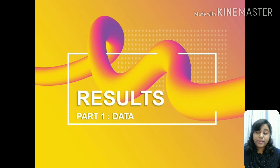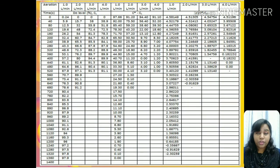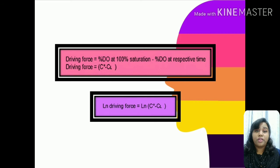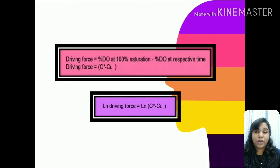As for results, it is comprised of three parts. The first part covers the data important for this experiment, where we obtain the dissolved oxygen (DO) level, the percentage of it, and the driving force. From the driving force, we then calculate the log driving force. From the table, what we identify is the maximum saturation, from which we derive the driving force using the formula: percentage of dissolved oxygen at 100% saturation minus the percentage of dissolved oxygen at the respective time. After obtaining the driving force value, we can calculate the log driving force value.